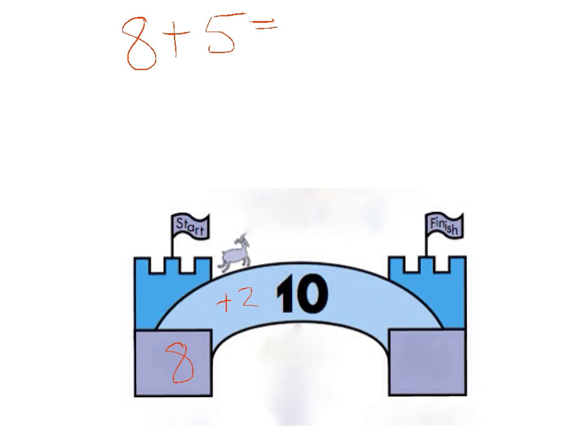And then you think back to the number you're adding on, which is actually 5, and you think 5 is plus 2 and plus 3. So those are the two numbers. So you've already done the plus 2 to get to 10, and then you can do the plus 3.